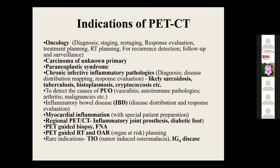About the indications of PET-CT at our site: we use it for oncology, for carcinoma, for non-primary and paraneoplastic etiologies, for inflammatory disorders like sarcoidosis, tuberculosis, fungal infections, detection of pyrexia of unknown origin, myocardial inflammation and viability, inflammatory joint prosthesis. We also do PET-guided biopsies, RFA, FNAC, and PET-guided radiotherapy planning. First time we have done PET-guided RFA for tumor-induced osteomalacia (TIO) here.